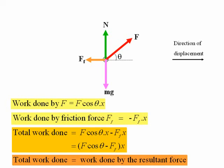But note that individual forces may do non-zero work. So if our crate is moving at a constant speed, the work done by the pulling force must be equal but opposite to the work done by friction. If the total work done by all forces acting on the object is not zero, then the object must be accelerating.